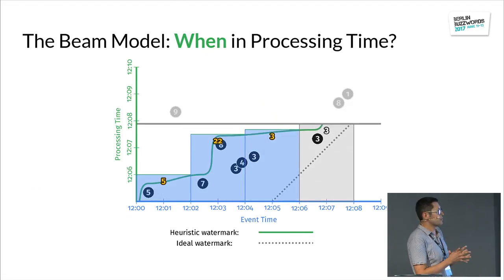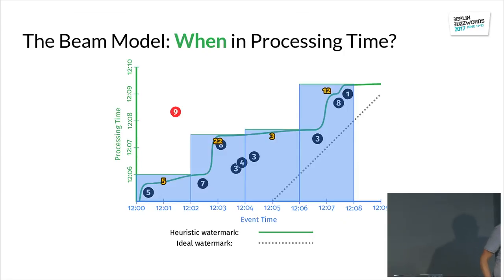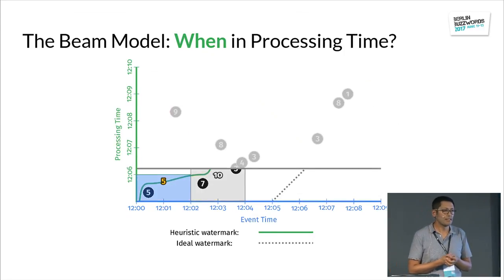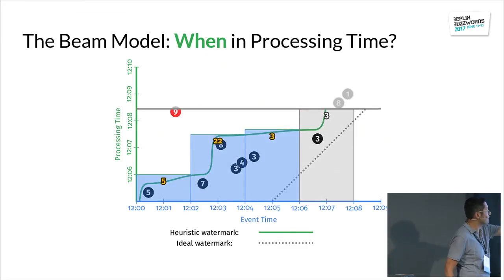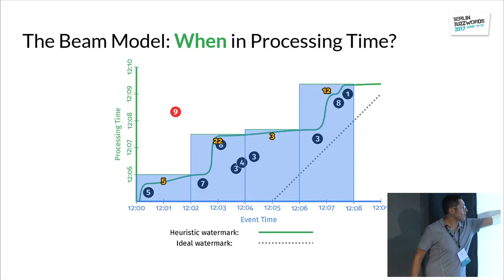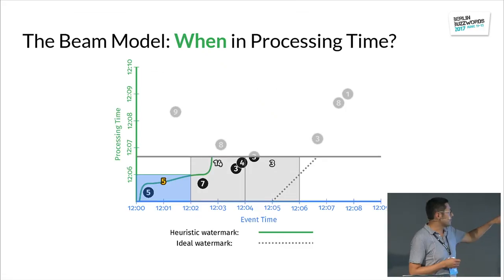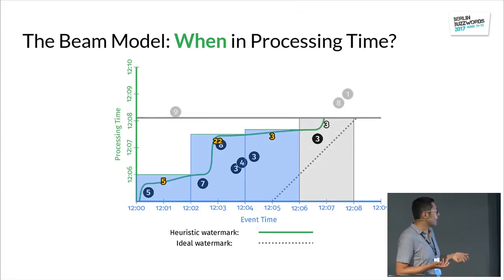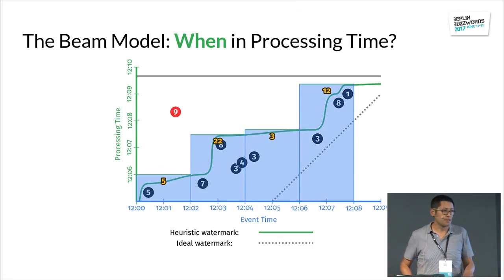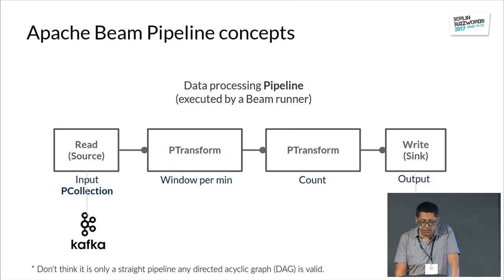This is based on the concept of Watermark — a line advancing in time that defines a measure of progress. The system is telling you: at this moment, I don't expect more data to arrive for this window. However, we can have outliers — events that arrive late. The Watermark is indicated in the diagram where we are summing numbers: when we arrive at the top, the result is calculated, but we still have to wait to produce results and deal with late-arriving data.